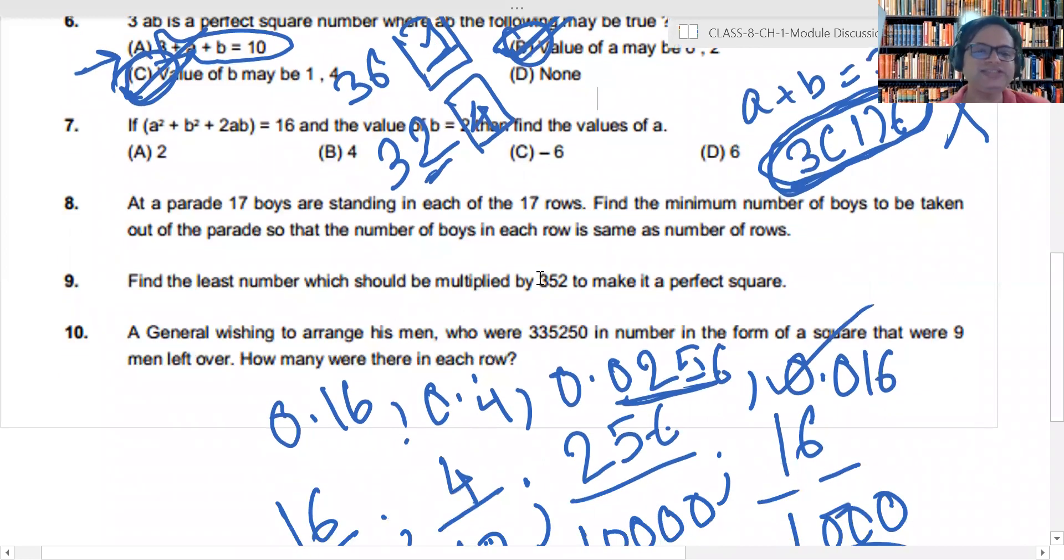8th. At a parade, 17 boys are standing in each of 17 rows. Find a minimum number of boys to be taken out of the parade so that number of boys standing in each row is same as the number of rows. Anybody who has done this question? Sir, Arya has done. Yes, Arya. What will be the answer? Arya, what will be the answer? Sir, Laksh also has done. Arya, why 33? Why 33?